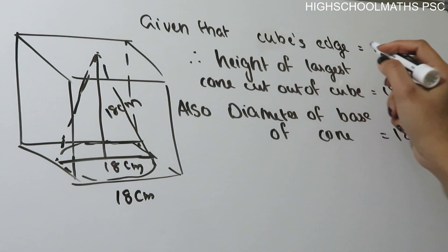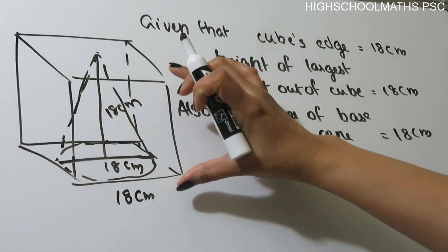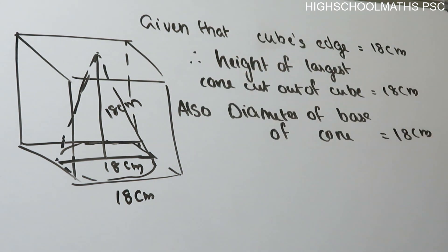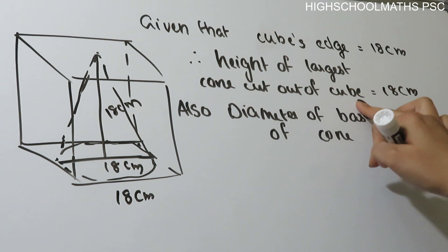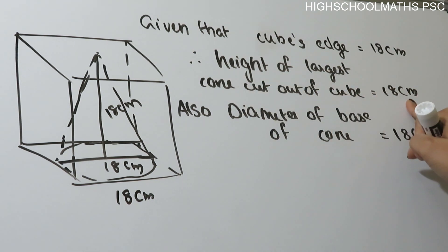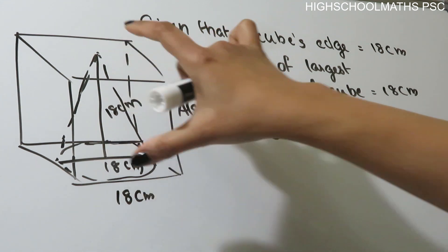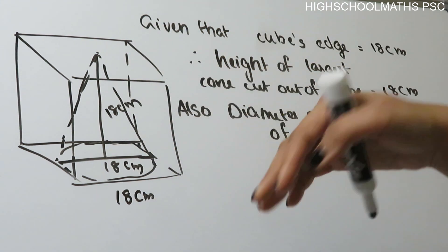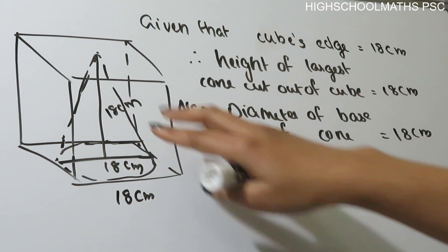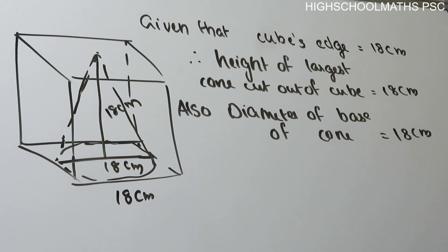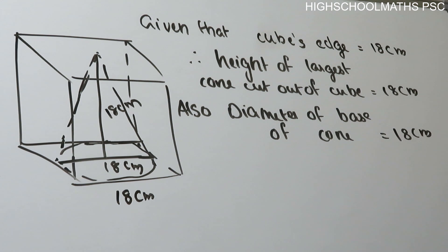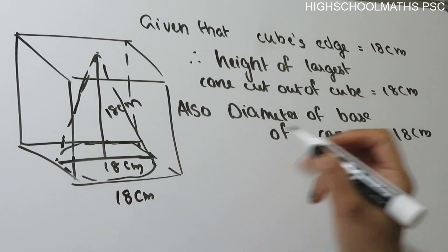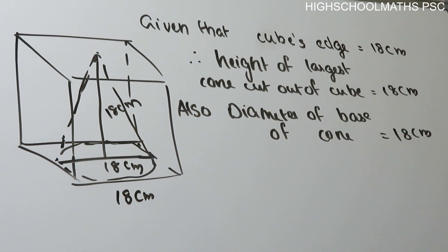Given that the cube's edge is equal to 18 cm, the height of the cube is 18 cm. So the height of the largest cut-out cone is equal to 18 cm. Also, the diameter of the base of the cone is equal to 18 cm.